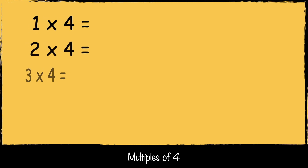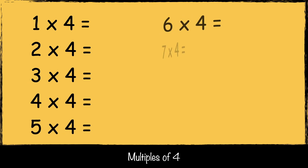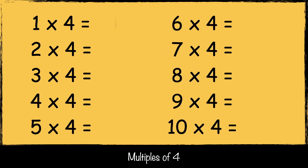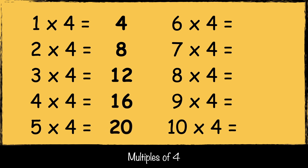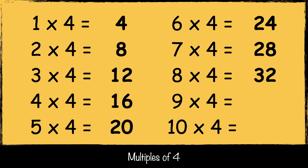Let's start by looking at multiples of four. Multiples of four are numbers that are in the four times table: 4, 8, 12, 16, 20, 24, 28, 32, 36, and 40. That's how we get multiples of a number.